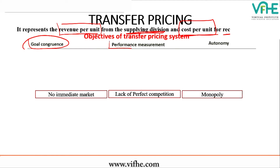Number one: a transfer price should be one that encourages goal congruence. Number two: a transfer price should be one that results in fair performance measurement — each division should get a fair profit. Number three: the transfer price should ensure autonomy, meaning individual division managers should have the right to set their own transfer prices without intervention from head office.